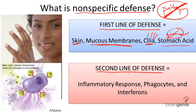The second line of defense is meant to serve as a backup to the first line of defense, kind of like the sweeper in soccer. The second line of nonspecific defense includes the inflammatory response, phagocytes, and interferons.